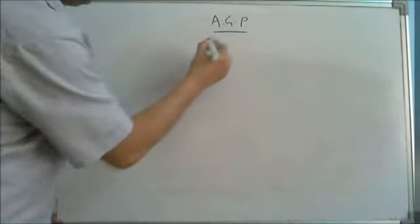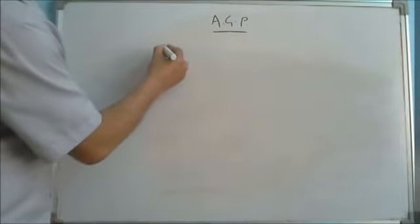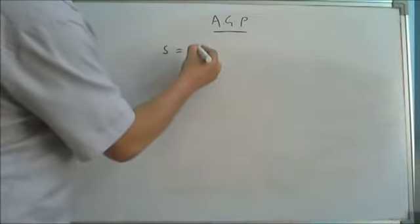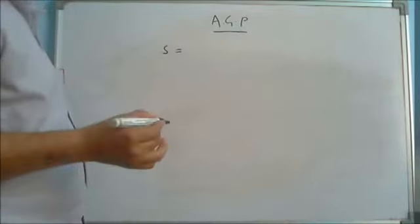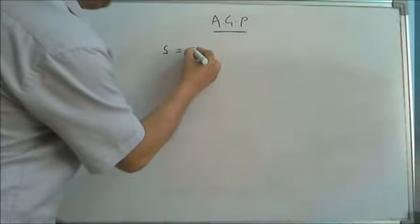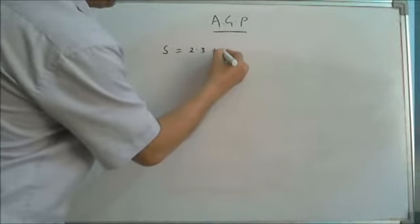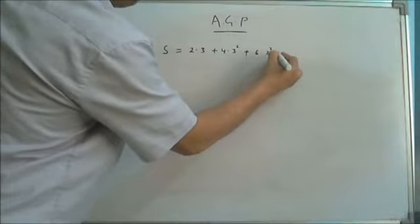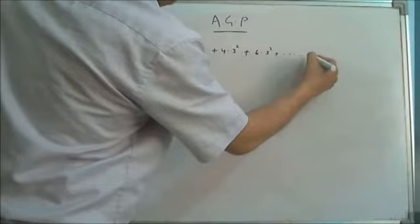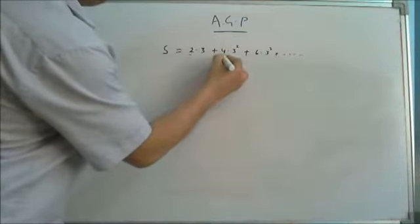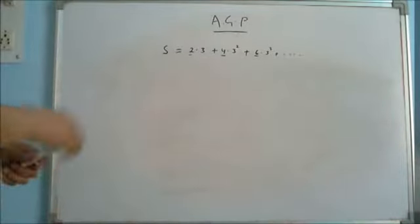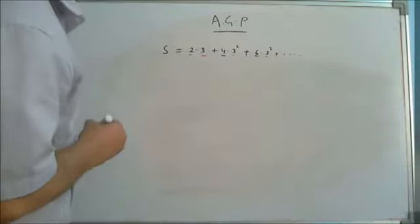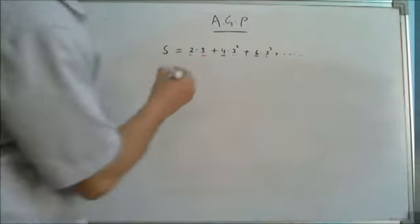AGP: Arithmetico-Geometric Series. A series which consists of both an AP as well as a GP is known as an Arithmetico-Geometric Series. We are developing a technique to solve the problems of AGP.